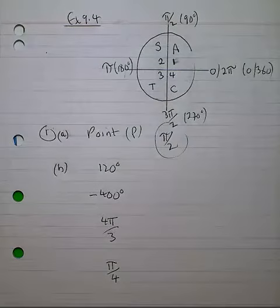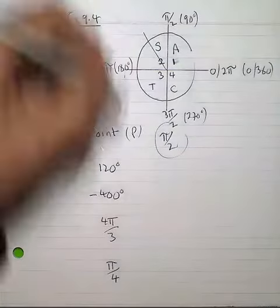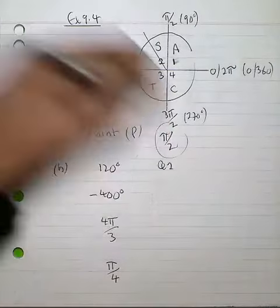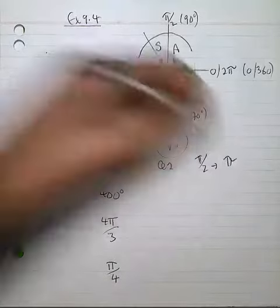Identifying the quadrant that 120 degrees would be in, 120 is approximately here. So quadrant 2, lying between π over 2 and π.